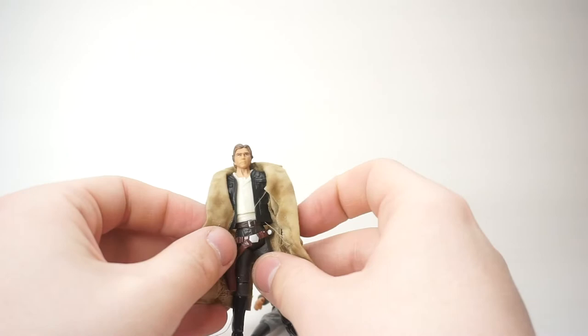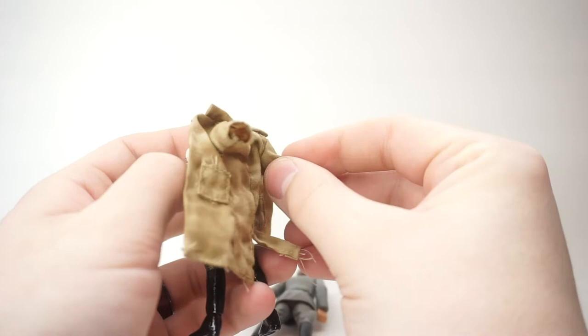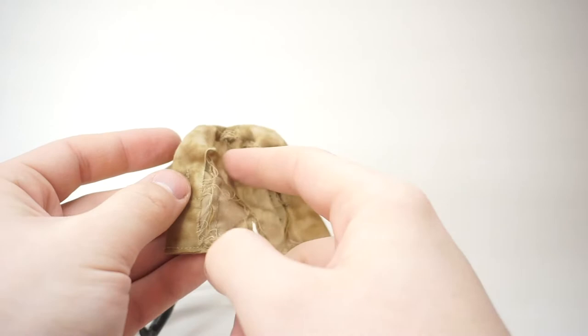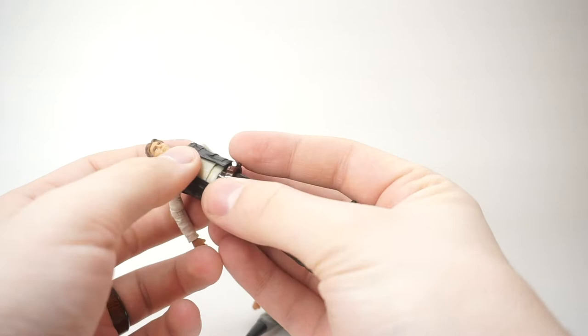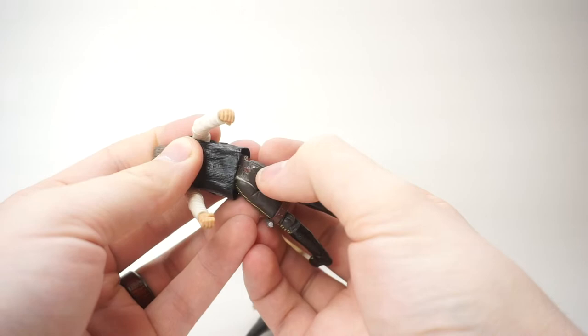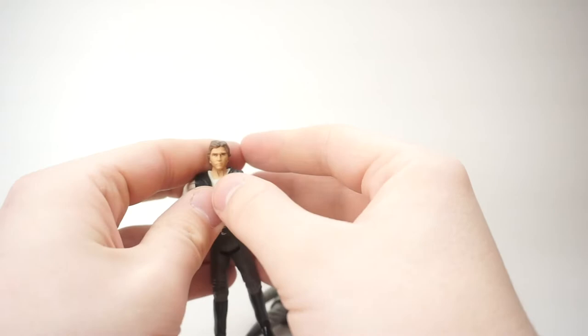The first thing is take this soft goods trench coat off - you can guess that this will be the trench coat for the Mimban officer. Again, with all the fraying, you can lightly take a match to that. I kind of dry fitted this custom together already so I know it works. I actually had to cut this holster off - it was glued onto his butt there.